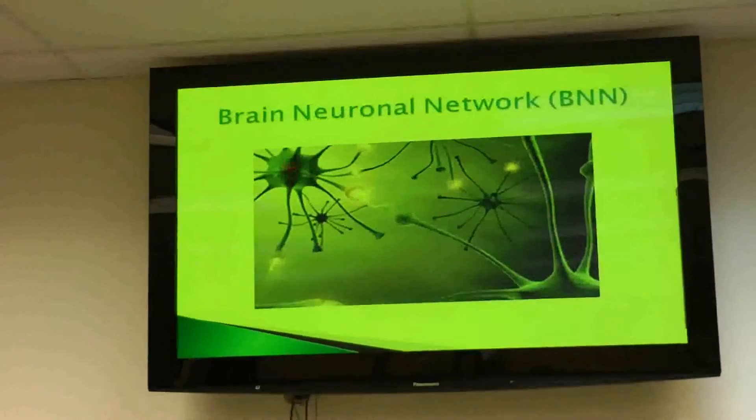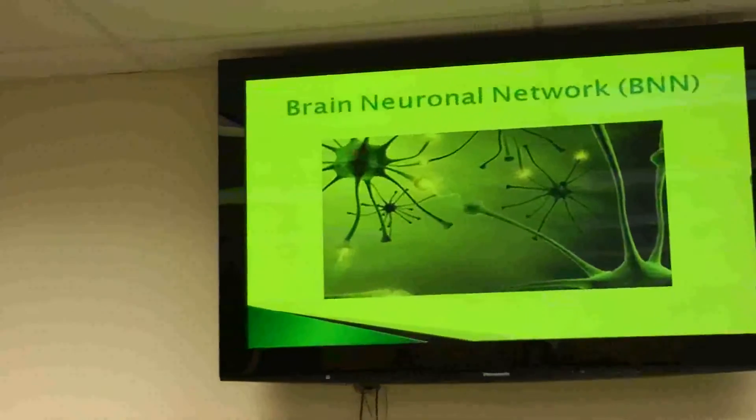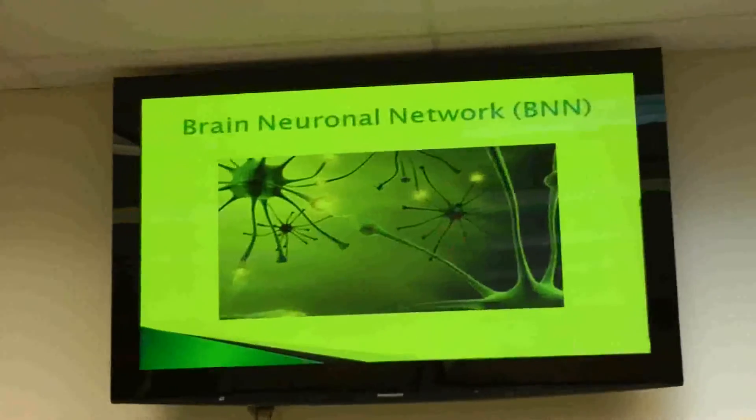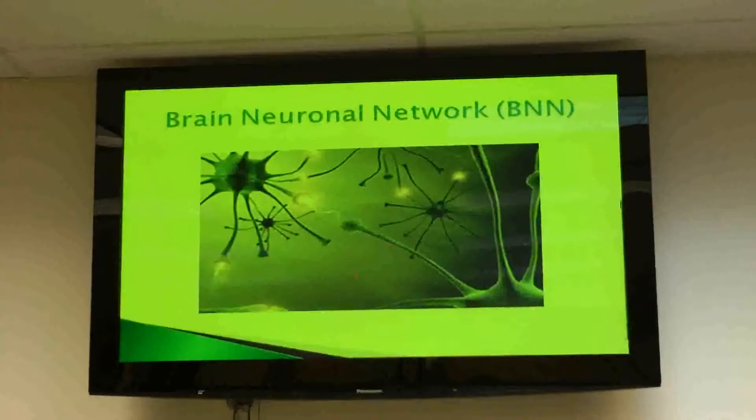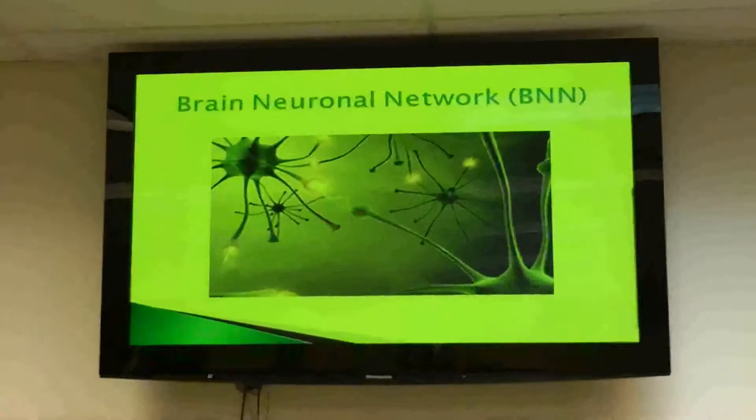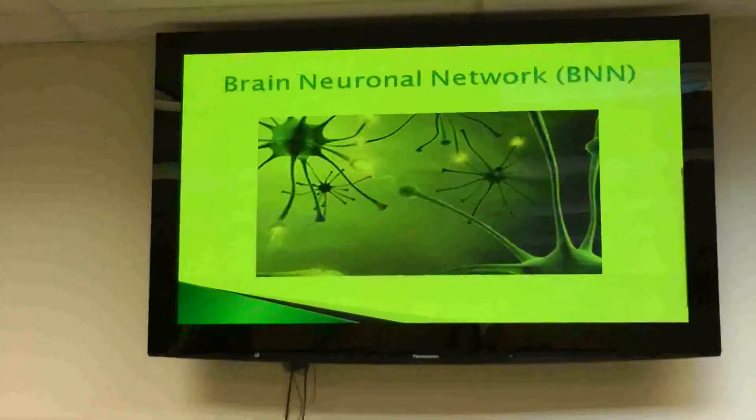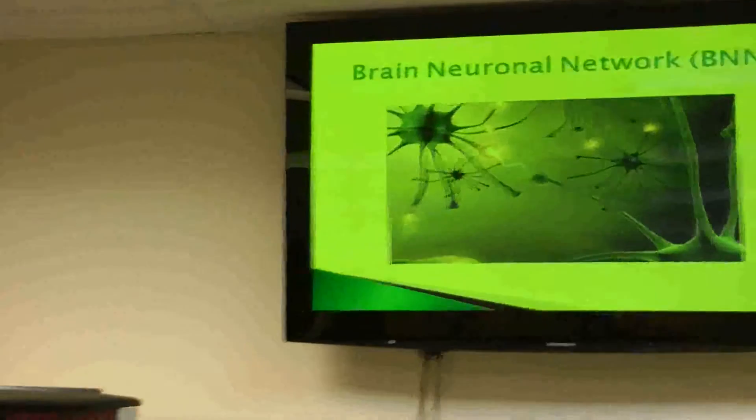These are the nerve cells — the neurons — and they talk to each other through connections or synapses. The way they exchange information: I'm communicating with you right now in English language so you understand what I'm saying. How does one nerve understand what the other nerve is saying?